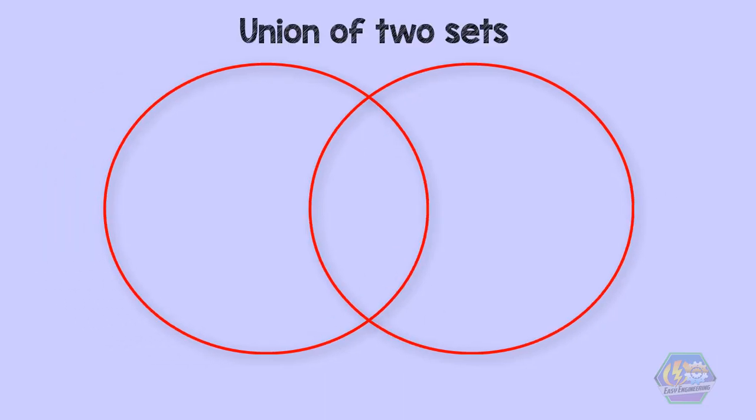The union of the two sets is the first operation of sets, and we will discuss it right now. The union of sets A and B is the set of elements which are in A, in B, or in both A and B. In symbols, it is written as shown.